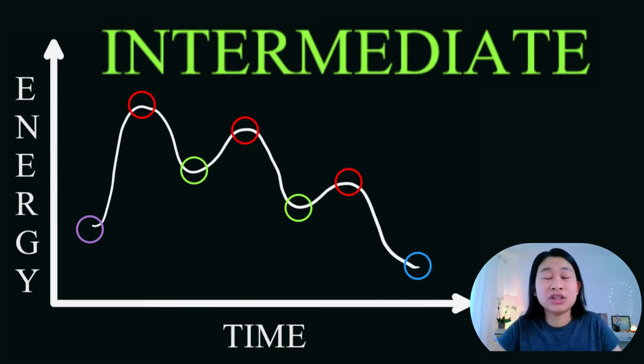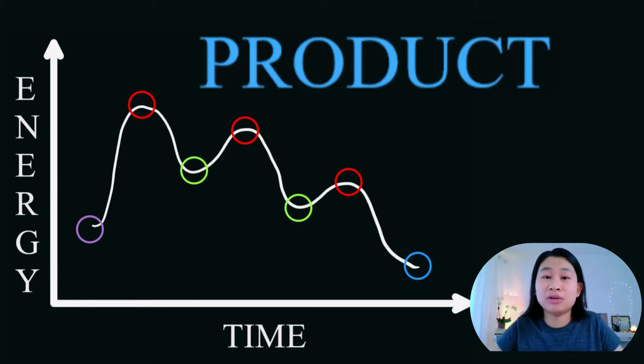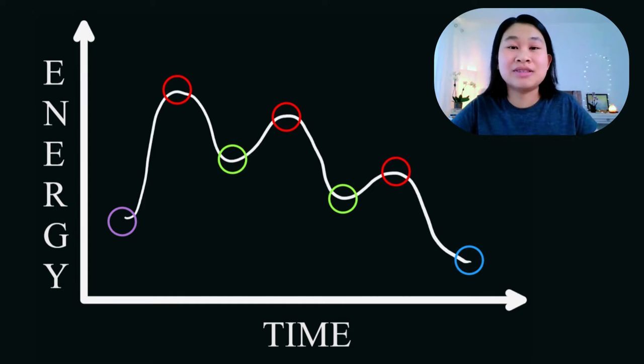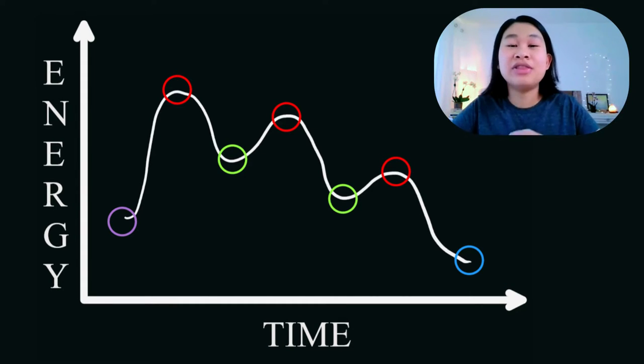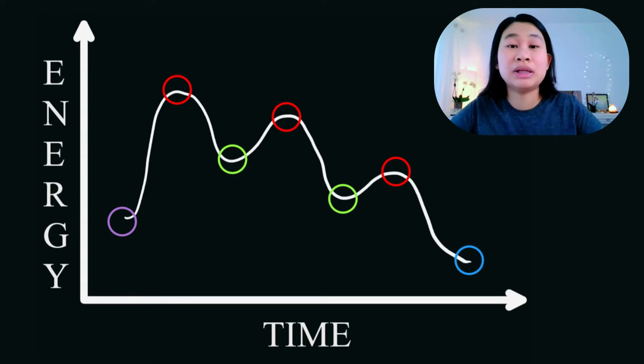This graph shows the difference between the transition states and the intermediates. As you can see, the transition states are going to be the energy peaks in the graph, and the intermediates are going to be the troughs in between the transition states.